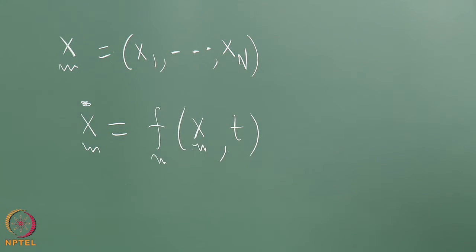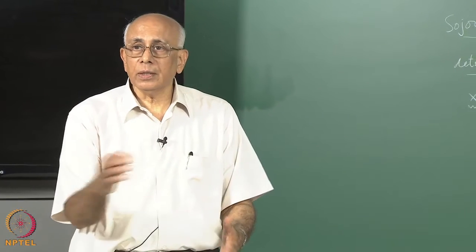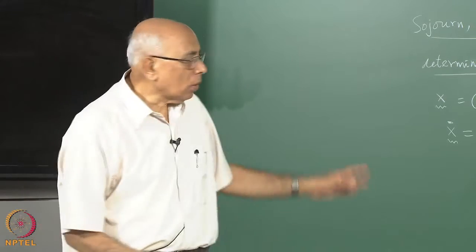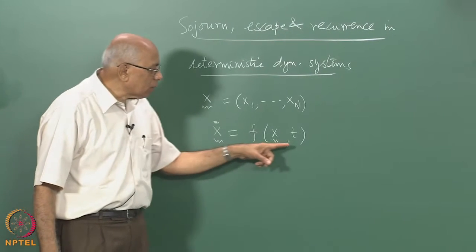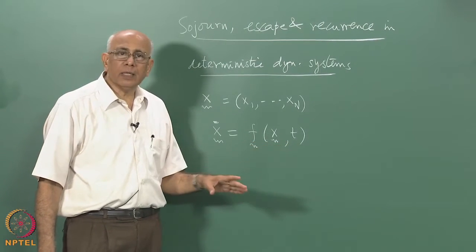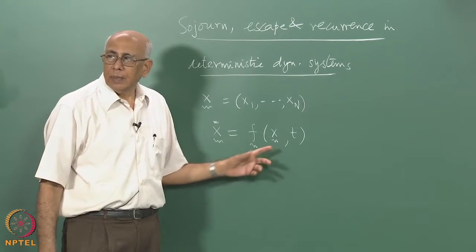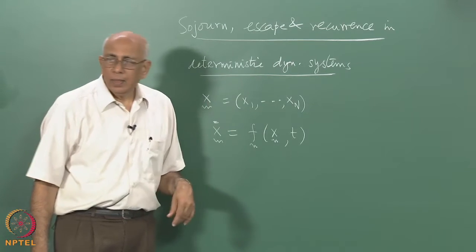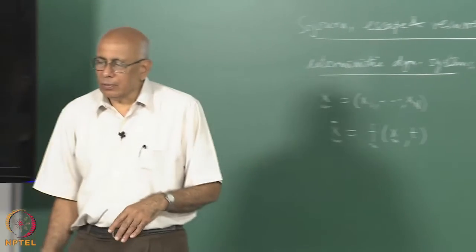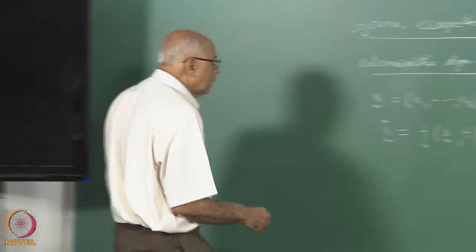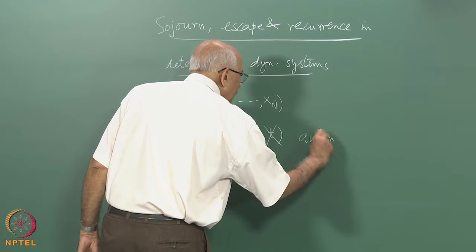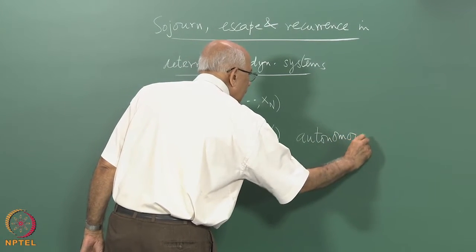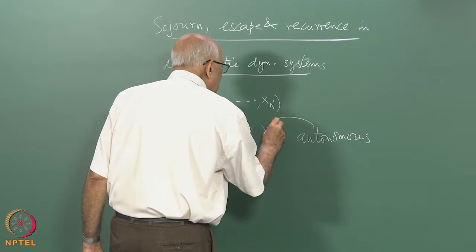In particular, if it is a Hamiltonian or Lagrangian system, then I have generalized coordinates and generalized velocities or momenta, which all come under the umbrella of these dynamical variables. If I have an explicit time dependence, the system is said to be non-autonomous, meaning the rule of evolution itself is changing with time. We will remove this and consider systems which are autonomous, where the time dependence is removed.